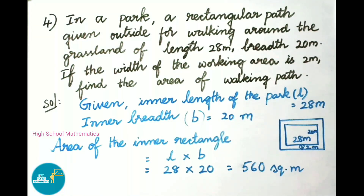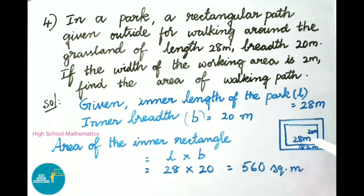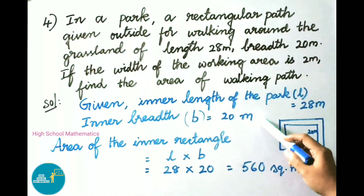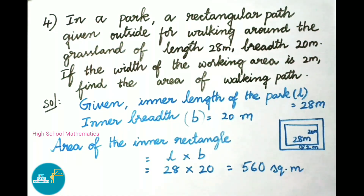Question number 4: in a park, a rectangular path is given outside for walking around the grassland of length 28 meters and breadth 20 meters. The width of the walking area is 2 meters. This is a rectangular path with an outer rectangle and an inner rectangle. The inner rectangle is the grassland with length 28 meters and breadth 20 meters. Area of inner rectangle equals 28 into 20, which equals 560 square meters.